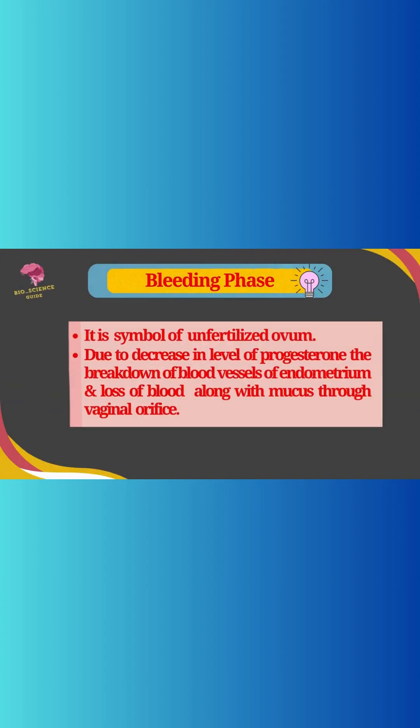The bleeding phase is a symbol that the ovum is unfertilized. Due to a decrease in the level of progesterone in the blood, there is breakdown of the blood vessels of the endometrium and loss of blood along with mucus through the vaginal orifice.